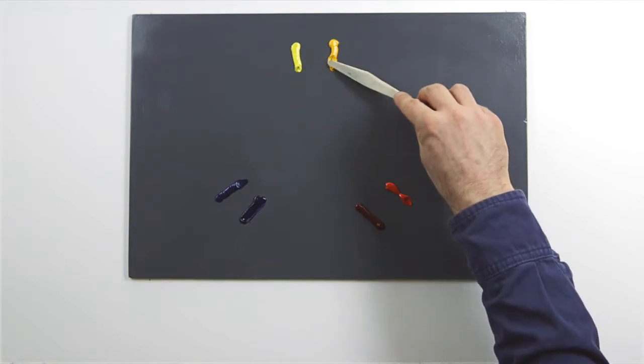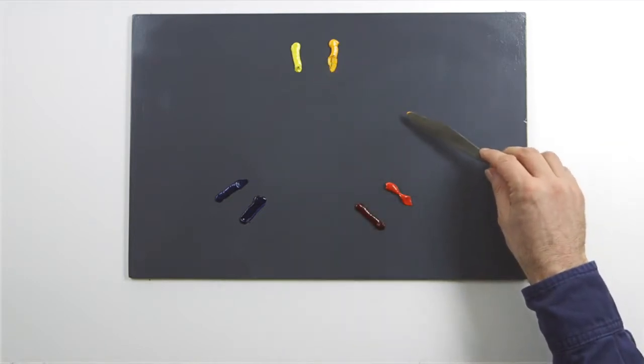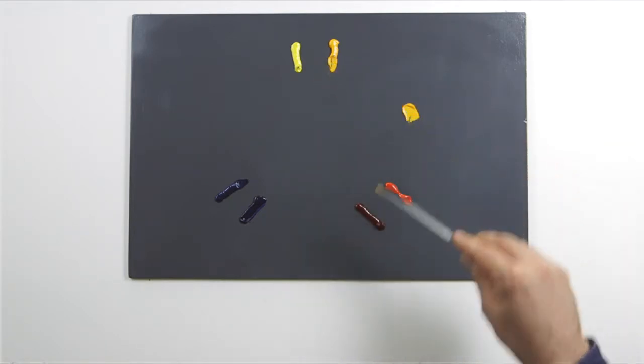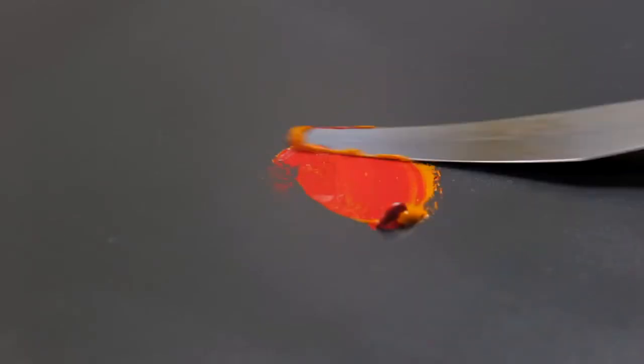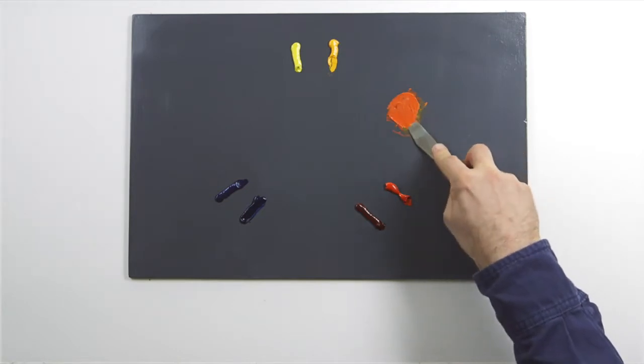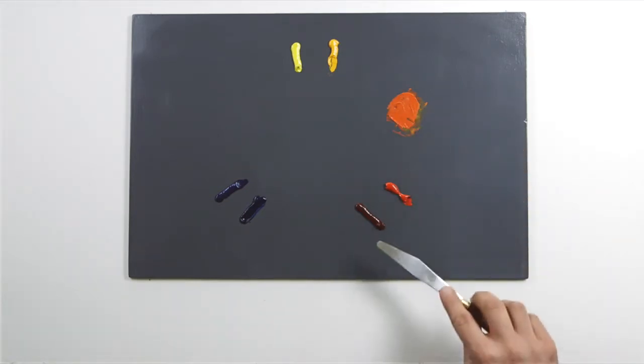I'm now going to combine the primaries that have the same secondary bias to make vivid and pure mixes. If I wanted, I could create a continuous circle with subtle and pure transitions and no gaps.